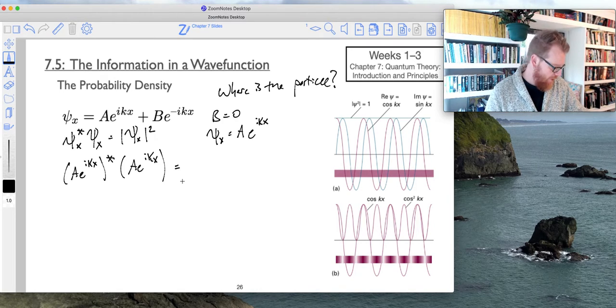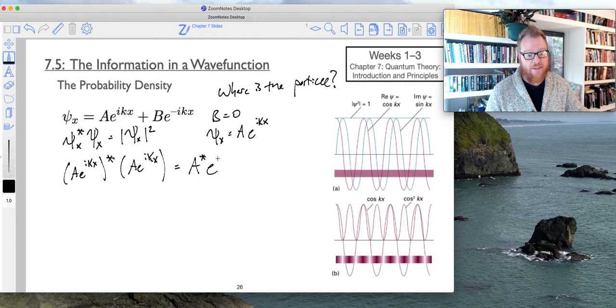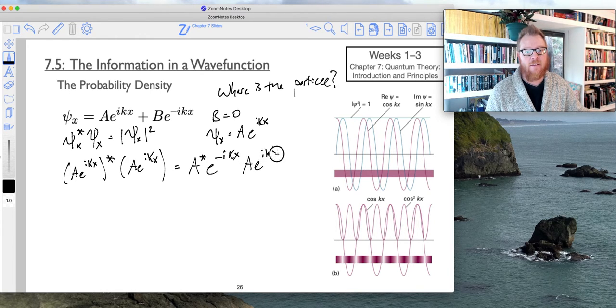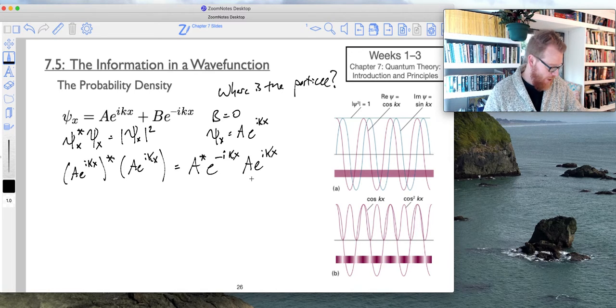And so all of that is going to equal the following. So we'll say a a star. And then when I apply the conjugate to that, that's going to be e to the negative i k x. And then that's going to be times a e to the i k x.